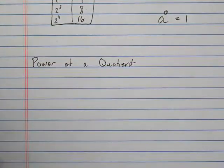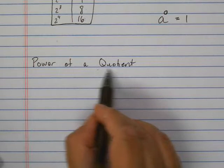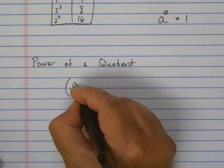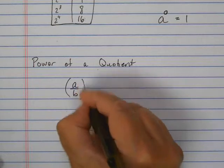So let's talk about power of a quotient. A quotient is a division problem. So let's say it's a divided by b to a power.